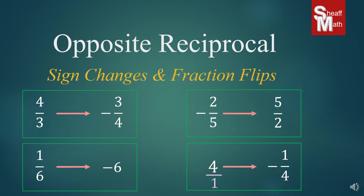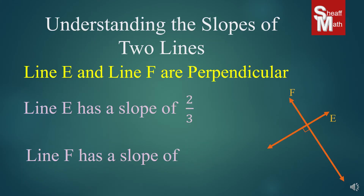Those cover pretty much all the different types, with one special case coming up. Let's go back to that problem with line E and line F. Line E had a slope of 2/3, and so line F, since it's perpendicular, is going to have a slope of negative 3/2.